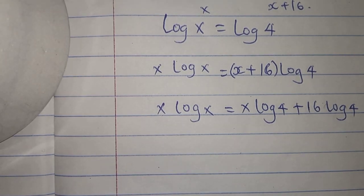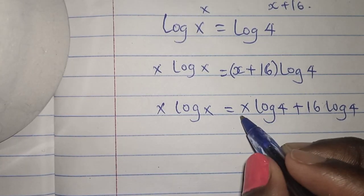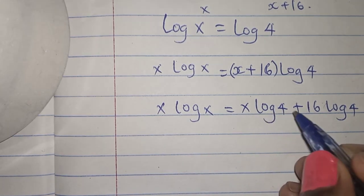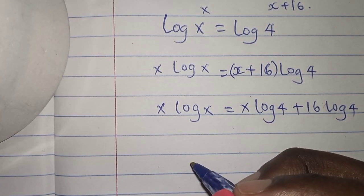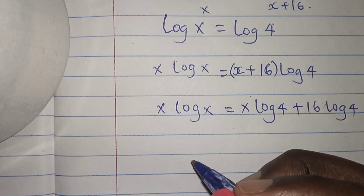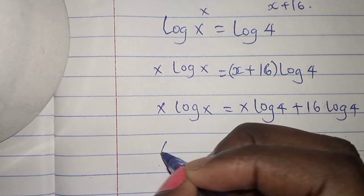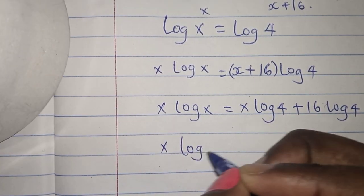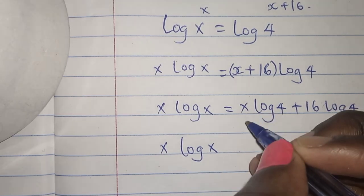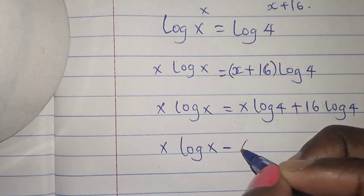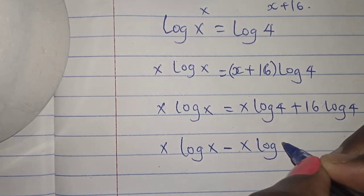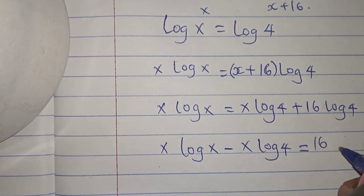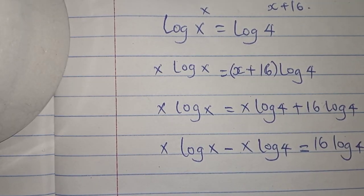So the next step that I'm going to do, I'm going to bring this x, x log 4 on the other side so that the x's can be on one side. So x log x, I'm bringing this log on this side so it will become a negative, negative x log 4 is equals to 16 log 4.